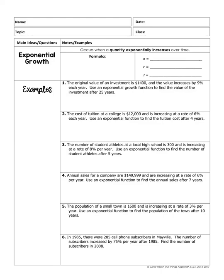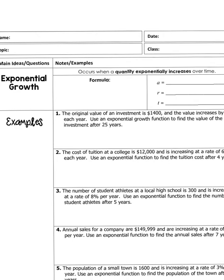Hello, today's video is on exponential growth and decay application problems. We're first going to look at exponential growth — when something is exponentially increasing over time. The formula for exponential growth is y equals a times 1 plus r to the t power. A stands for the initial or starting amount, r is your rate of growth, and t stands for time.